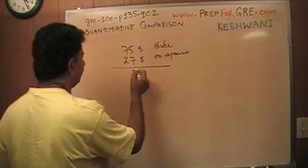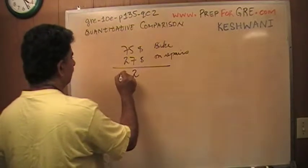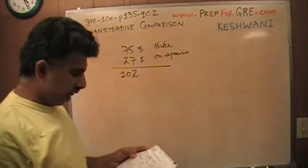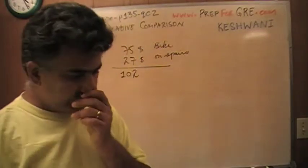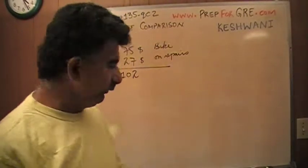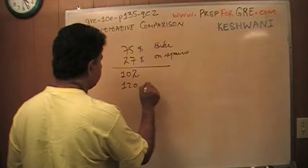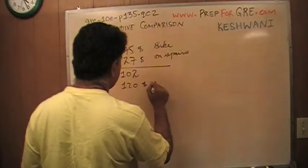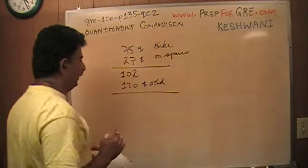So altogether she spent $102 total. It looks like $102 she spent altogether. And then we're told that she sold it for $120.